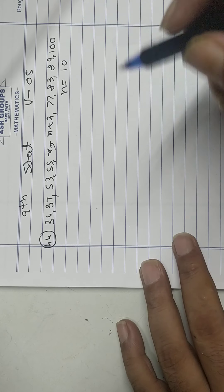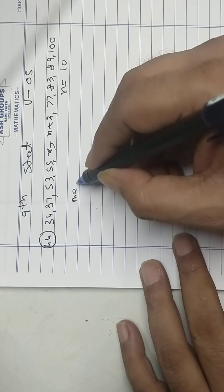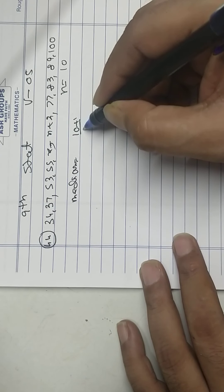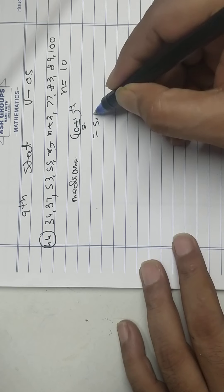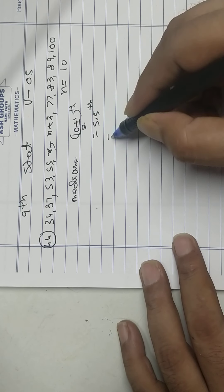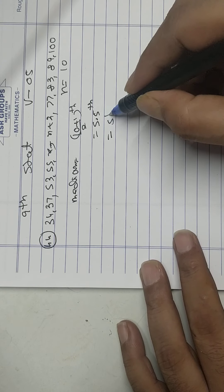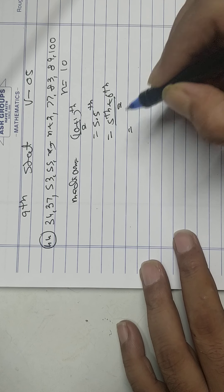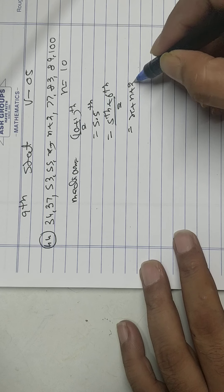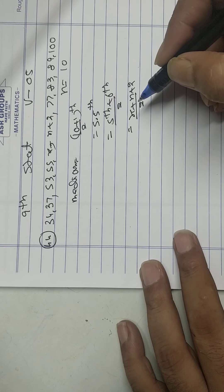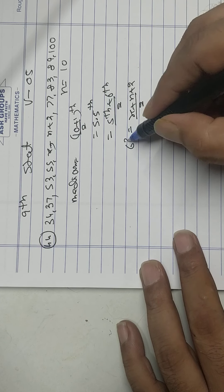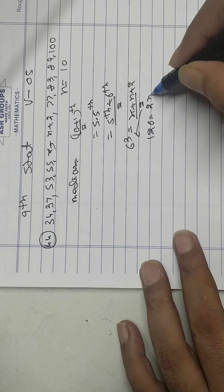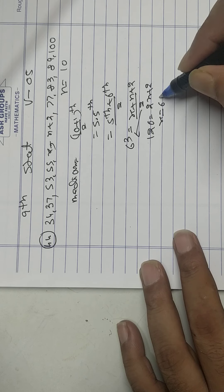N is 10. Median equals 10 plus 1 upon 2, that is 5.5 term. 5.5 is average of 5th plus 6th divided by 2. 5th is x, 6th is x plus 2 divided by 2. Median is given 63. So 126 equals 2x plus 2. x equals 62.